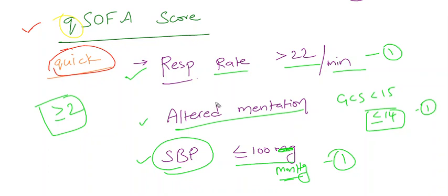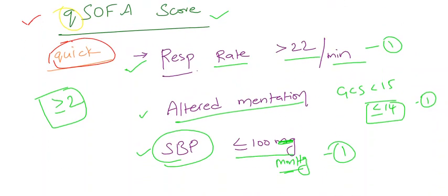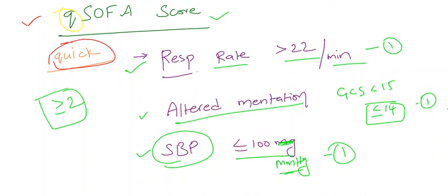Rather, it should prompt us to further investigations for the presence of any MODS or organ dysfunction, or increase the frequency of monitoring. At first, we have to do this quick SOFA score to assess whether the patient needs any further investigations or we have to assess them thoroughly for evidence of organ dysfunction, and in-depth investigation should be done to find where the septic focus is.